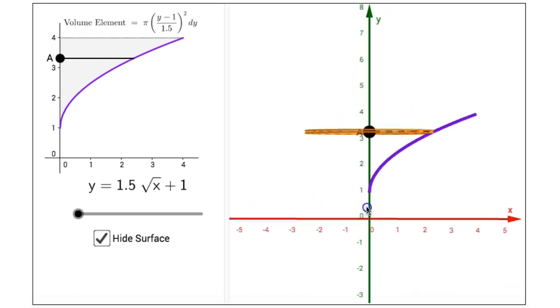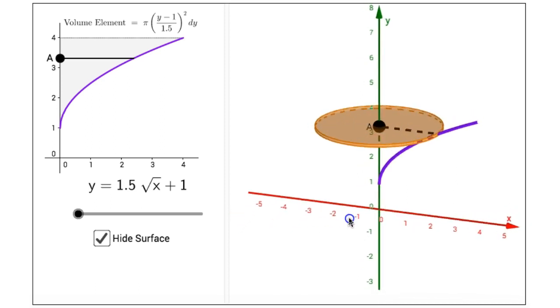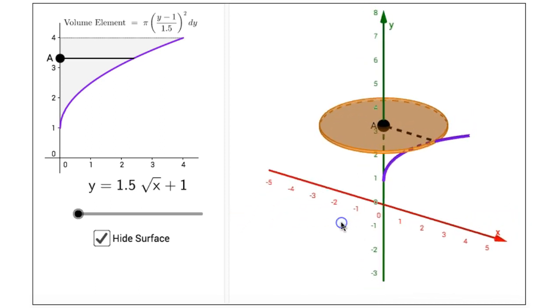So this volume element is a small cylinder whose height is dy. The radius of the top and bottom, in this case, is both y minus 1 divided by 1.5.